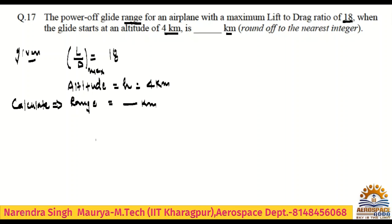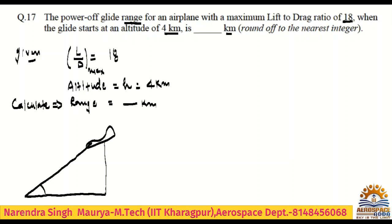The glider is at 4 kilometer altitude and starts gliding from there. I will draw a diagram so you may easily understand. The gliding angle is gamma, point A is the start, point B is the end, and the horizontal distance is the range R. The vertical distance is the altitude H.